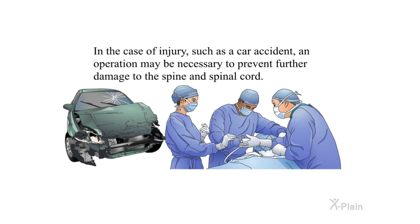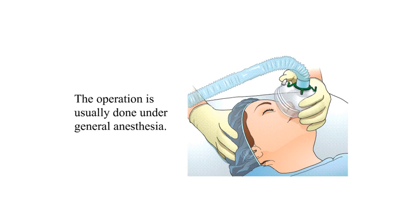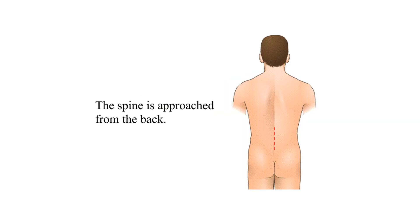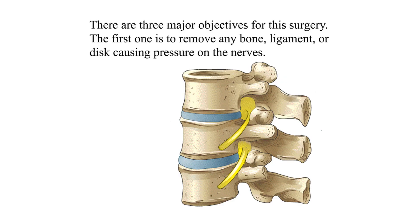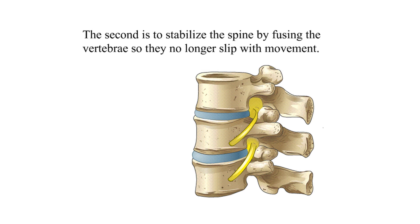In the case of injury such as a car accident, an operation may be necessary to prevent further damage to the spine and spinal cord. Surgical treatment: The operation is usually done under general anesthesia. The spine is approached from the back. There are three major objectives for the surgery: the first is to remove any bone, ligament, or disc causing pressure on the nerves.